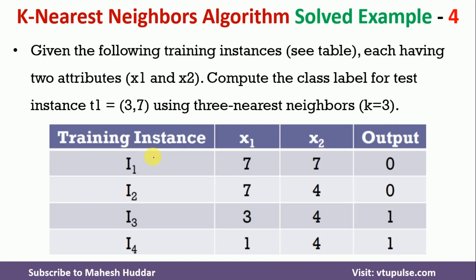This is the dataset given to us. It has four instances i1, i2, i3, and i4. x1 and x2 are the two features in this case, and the output is the target variable. The output has two possibilities, either 0 or 1. We need to classify the new instance t1 = (3, 7) into one of the classes by considering the number of neighbors as K=3.